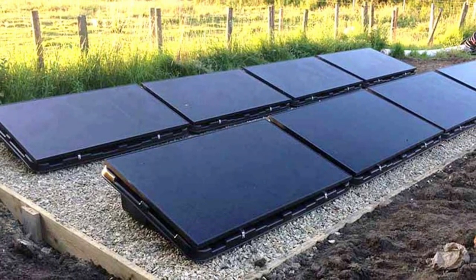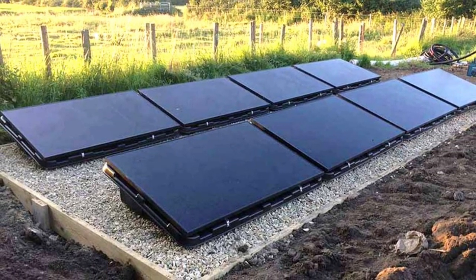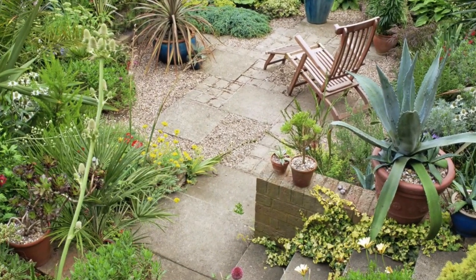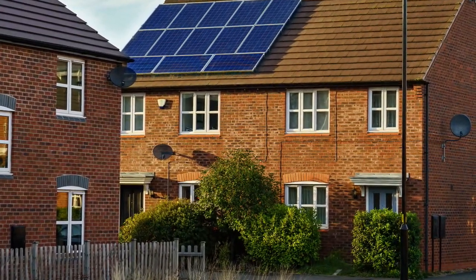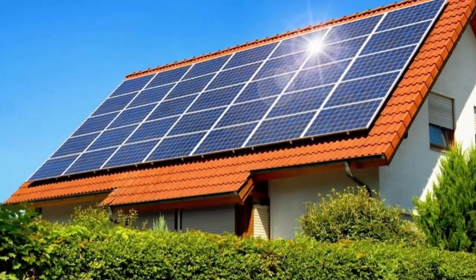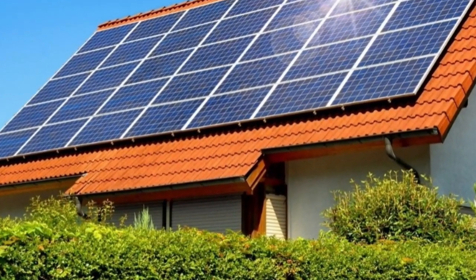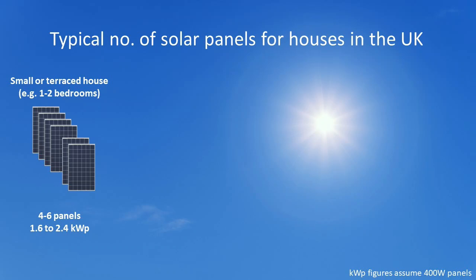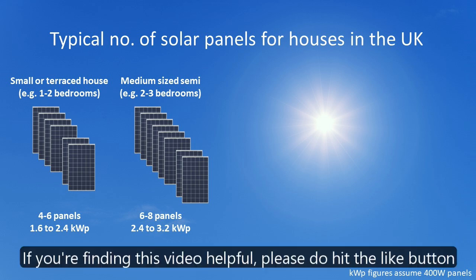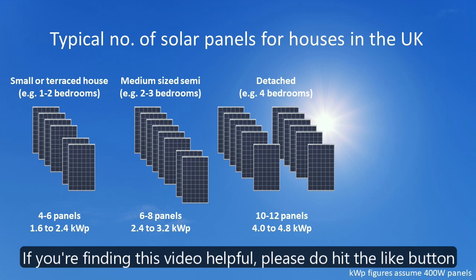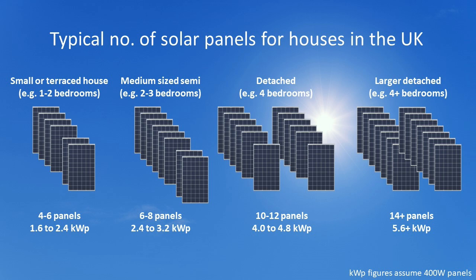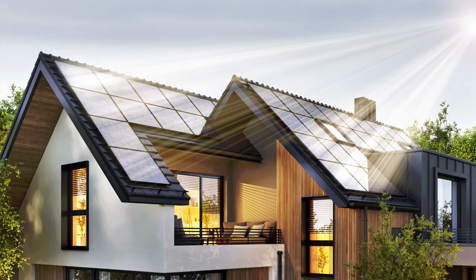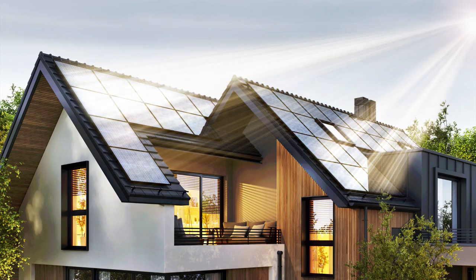Although ground mounted panels are probably easier and cheaper to install as no scaffolding would be required, not many people in the UK have enough available land to make this a realistic option. For most people, installing solar panels on your roof makes the most sense, and so the amount of usable roof space will dictate the number of solar panels you can install. With individual solar panels generally measuring around 2m by 1m, solar PV installations in the UK typically comprise between 4 and 12 panels depending on whether you live in a smaller terraced house, a medium sized semi, or a detached property. Larger detached homes will obviously provide even more roof space, allowing installations of 16, 20 or even more panels.